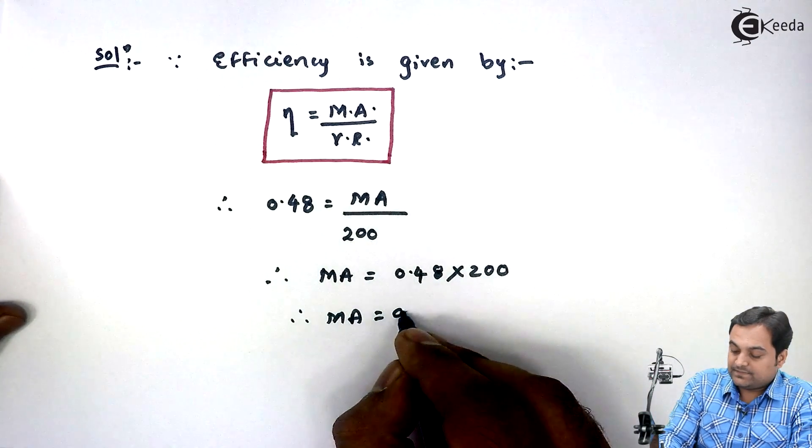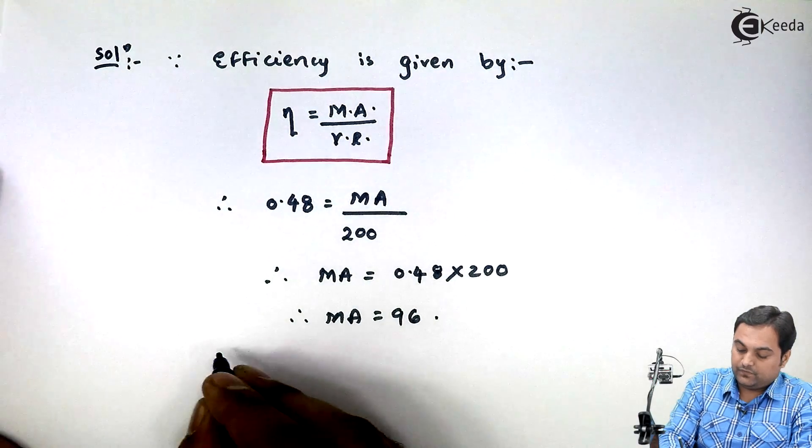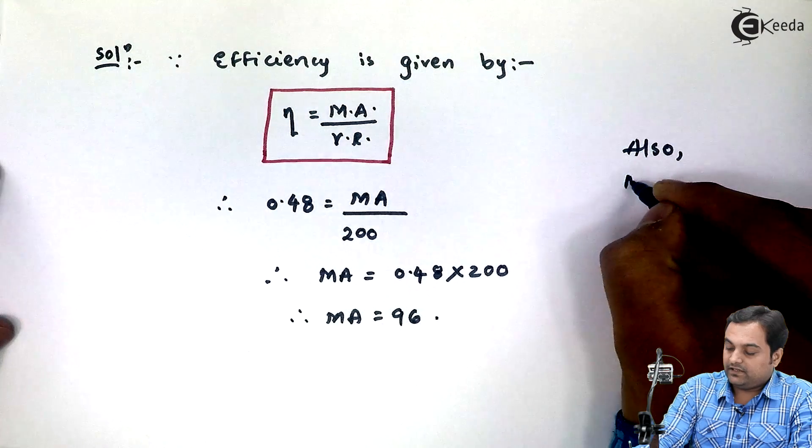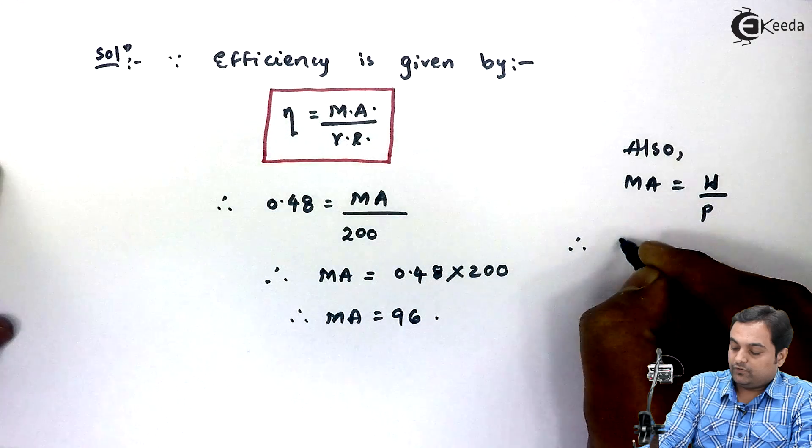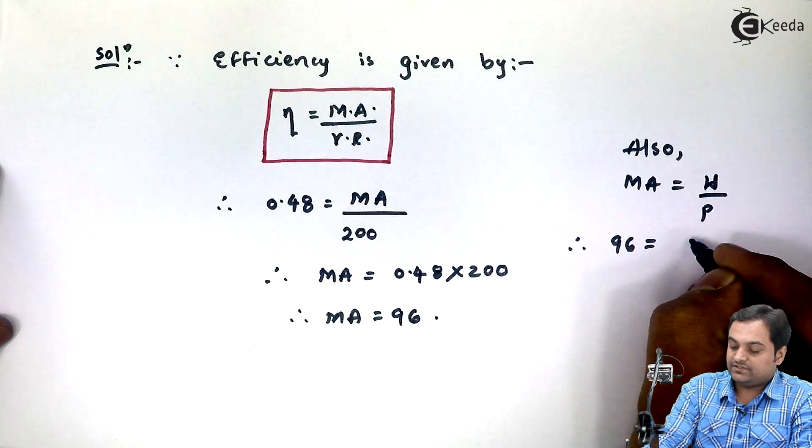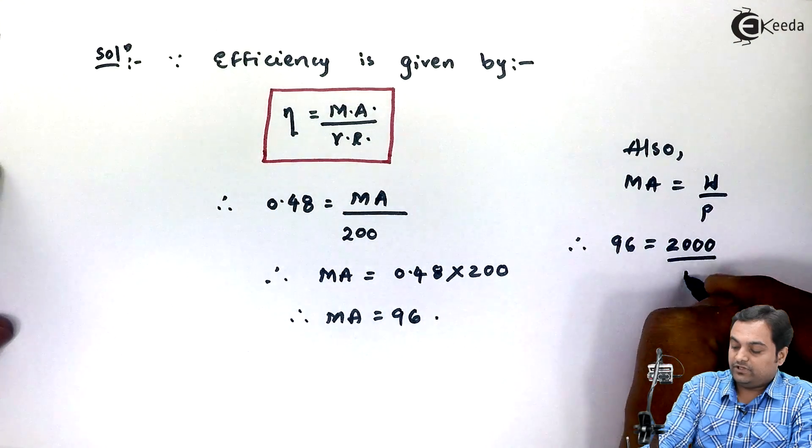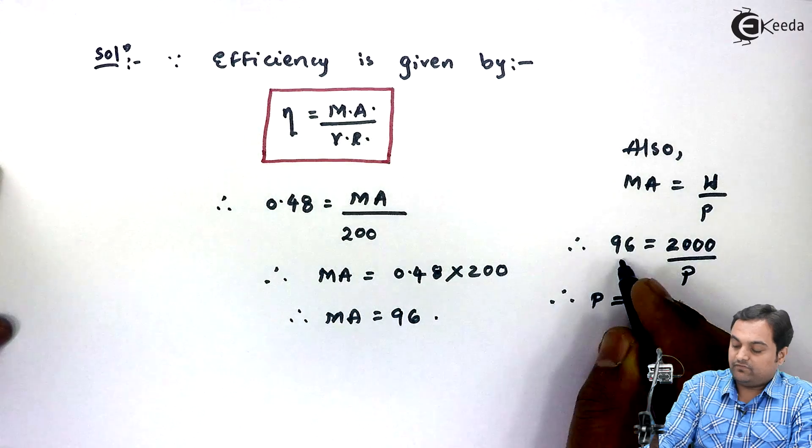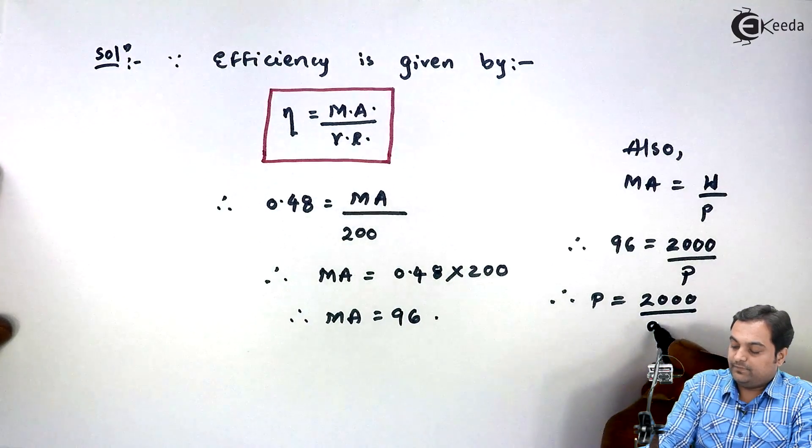Once we know MA, I can say that mechanical advantage is equal to load upon effort. Therefore, mechanical advantage is 96, load is 2000 Newtons, and effort is what we require. So finally, P will shift to the other side. Here I have 2000 divided by 96.